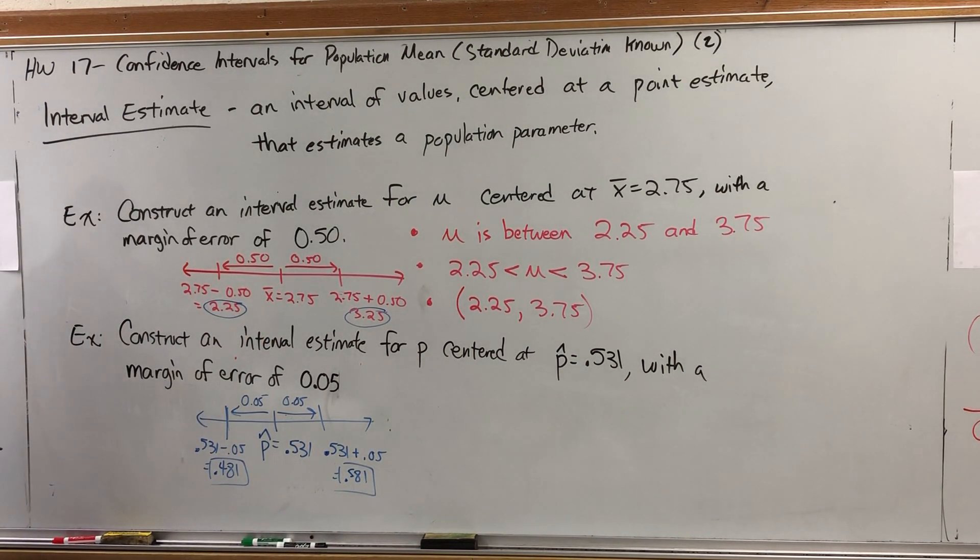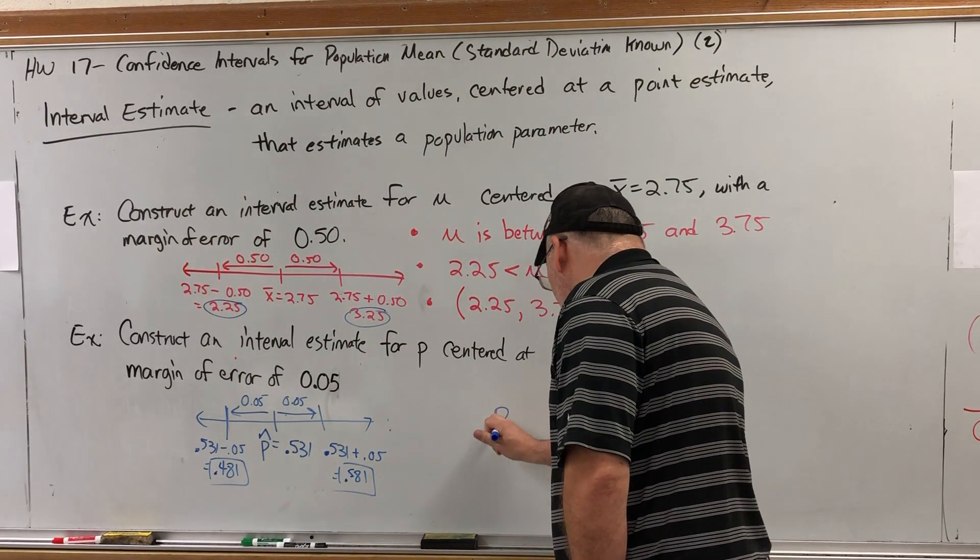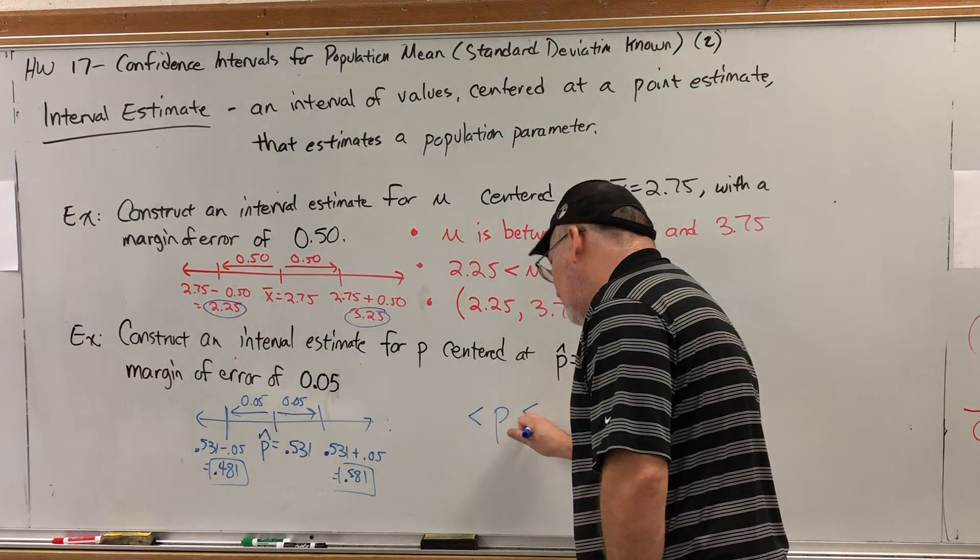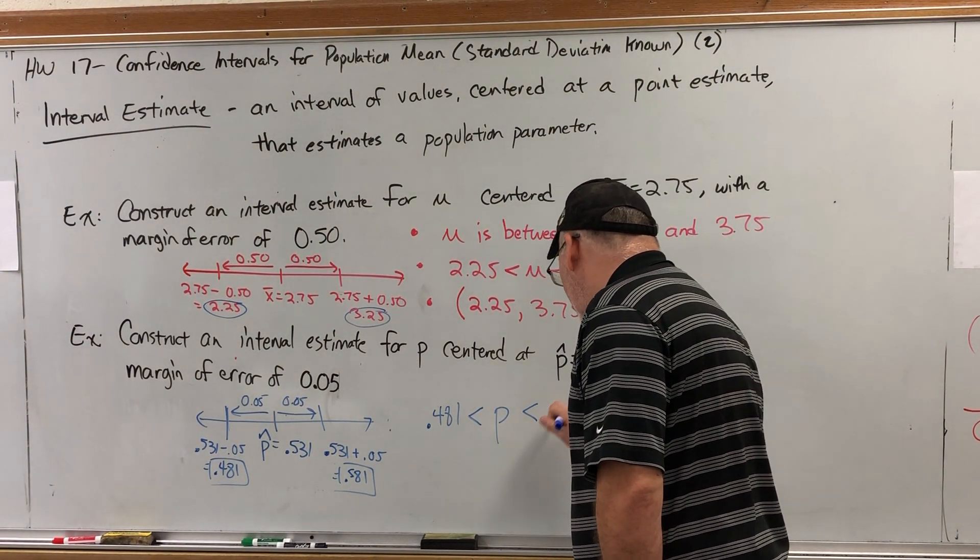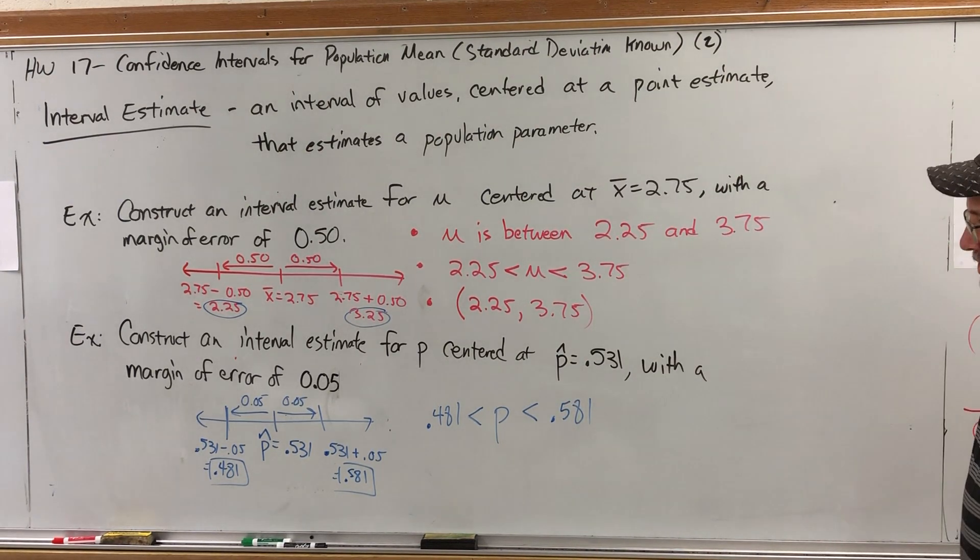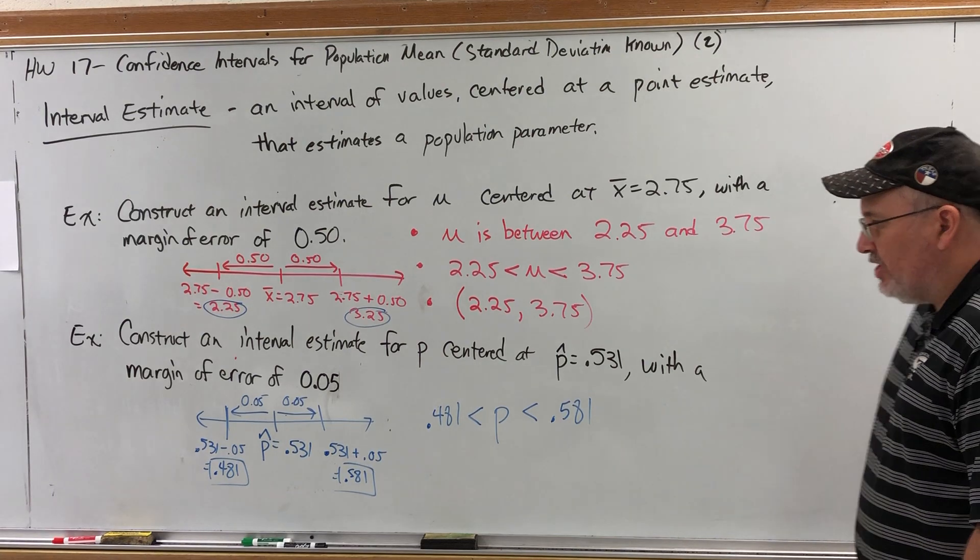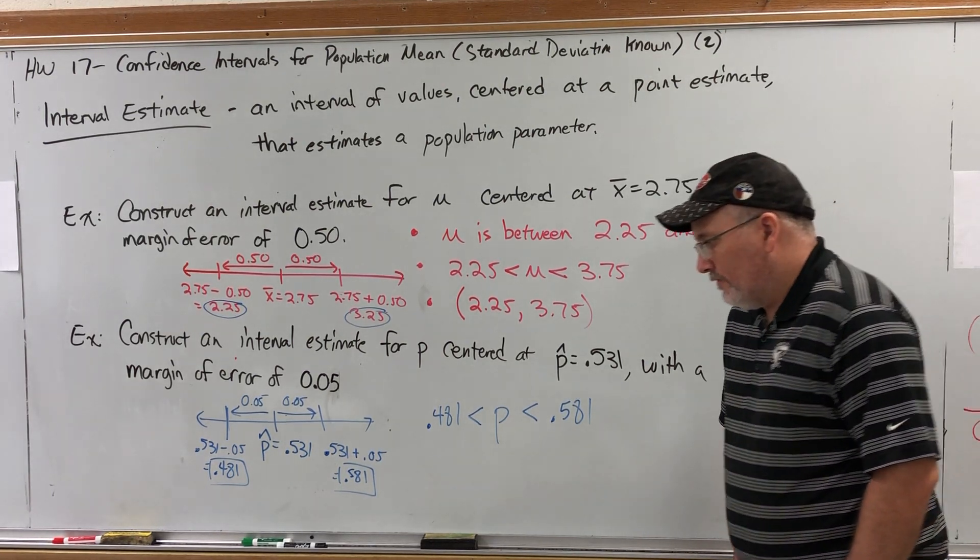So we could say that based on this sample's proportion, we're estimating that the population proportion is between 0.481 and 0.581. Now, how do we get the margin of error? We're about to learn that in the next video, but once we have the margin of error, it just says go left and right of the center and make your interval.